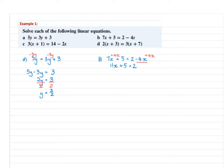Now we don't want plus 5 on the left, we want to move it to the right hand side. The inverse operation of addition is subtraction, so subtract 5 on both sides, which leaves 11x equal to 2 subtract 5, which is minus 3. The inverse operation of multiplication is division, so divide both sides by 11, giving x equals minus 3 over 11.